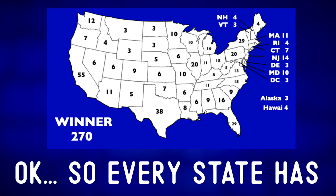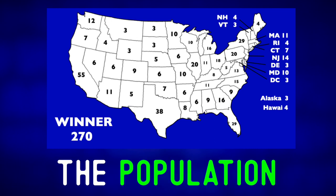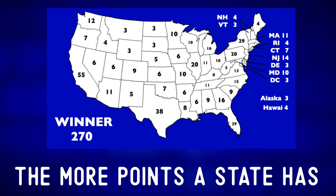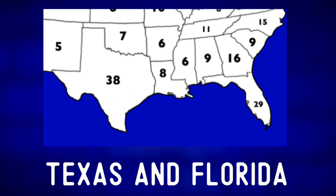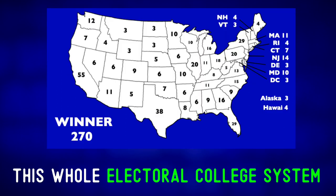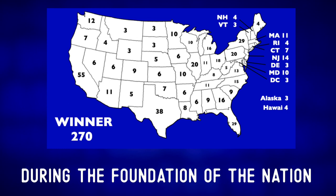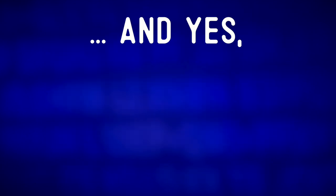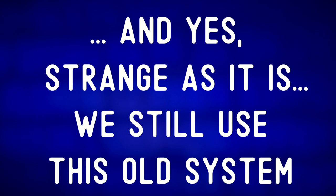So every state has two points. The other points come from the population — the bigger the population, the more points a state has. That's why California, Texas, and Florida have so many points. This whole electoral college system was a compromise agreed on during the foundation of the nation almost 250 years ago, and yes, strange as it is, we still use this old system.